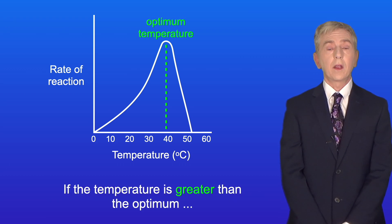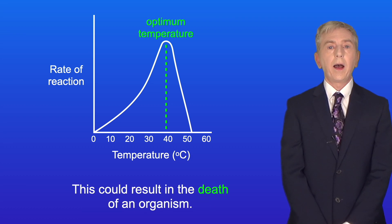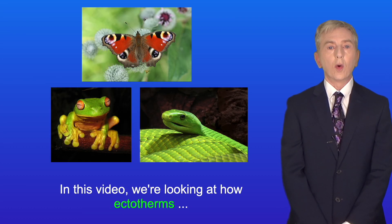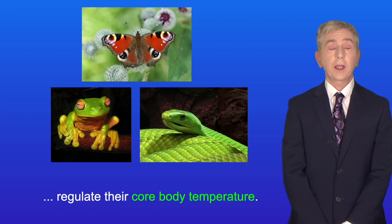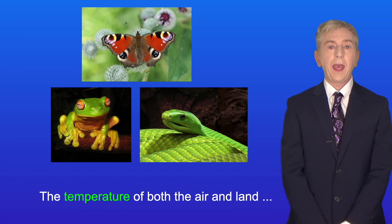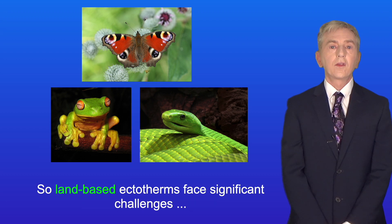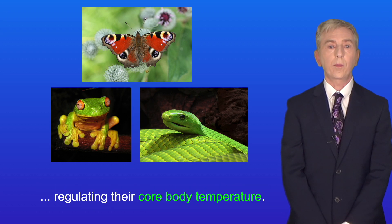If the temperature is greater than the optimum, then enzymes can become permanently denatured, and this could result in the death of an organism. So in this video, we're looking at how ectotherms regulate their core body temperature. We're going to look at land-based ectotherms. The temperature of both the air and land can vary massively throughout the day and also during the year, so land-based ectotherms face significant challenges regulating their core body temperature.